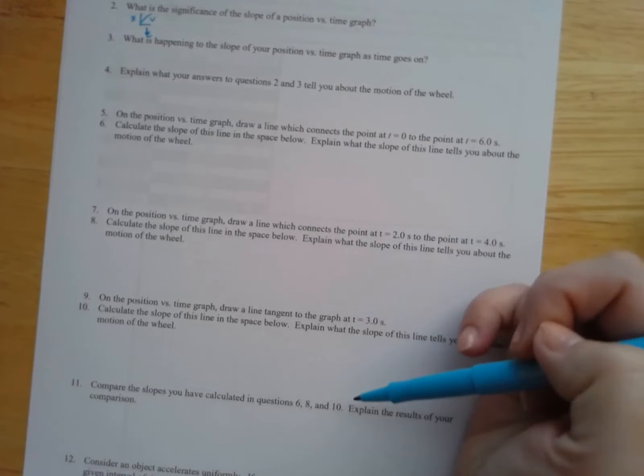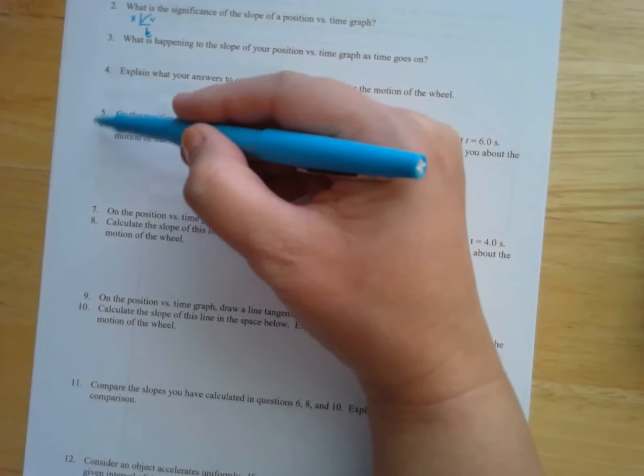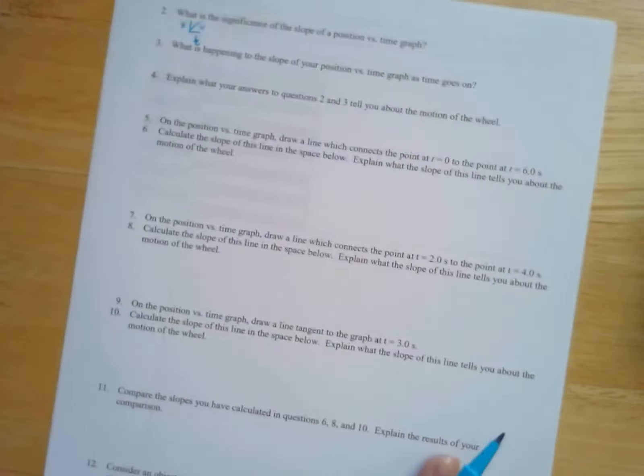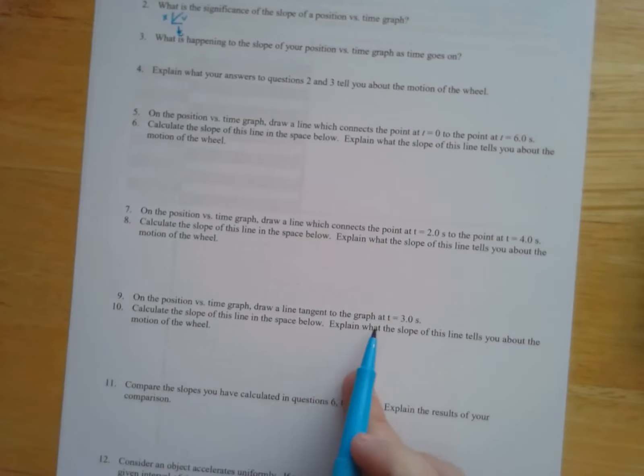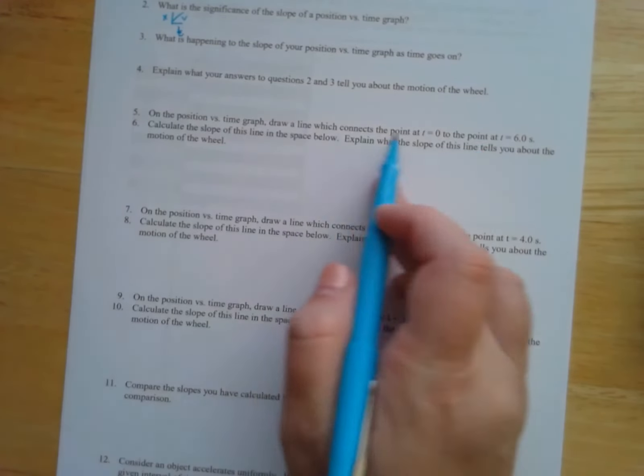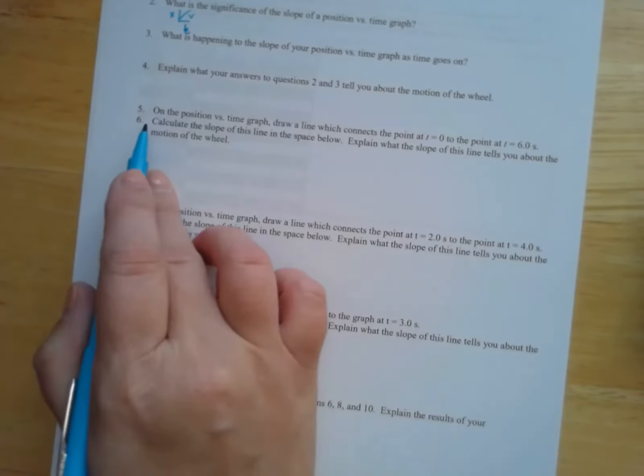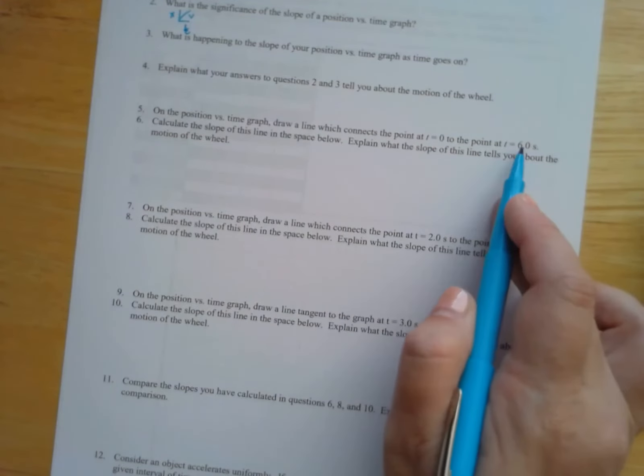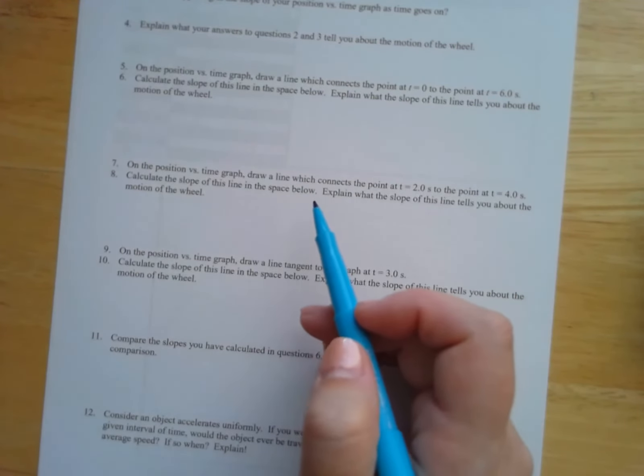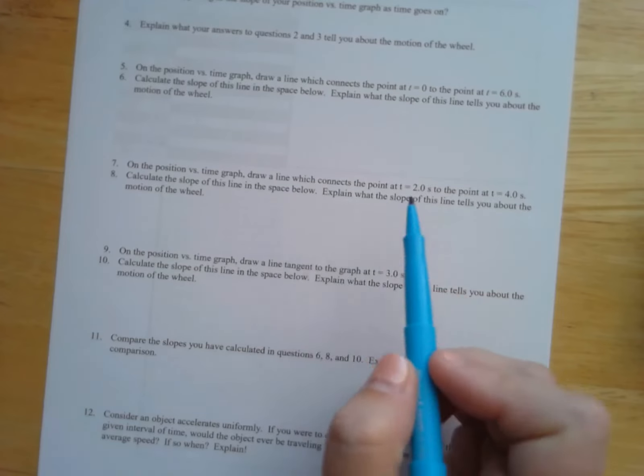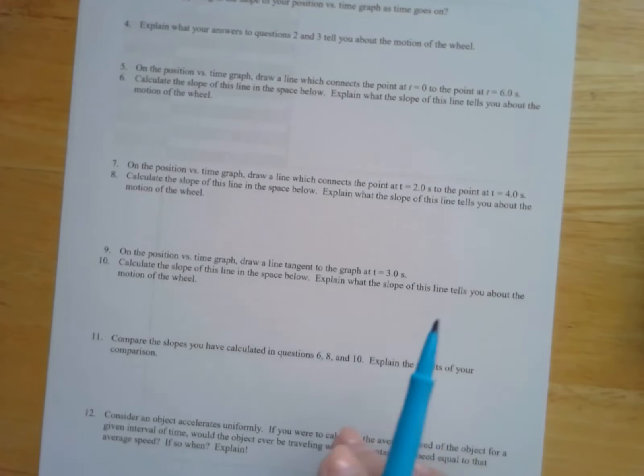And then there's a series of questions here. See how they're in little groups, five and six, seven, eight, nine, and 10. What you need to do is draw lines that connect different points on the graph. So this first one is draw a line that connects zero to six seconds. Here the next one is draw a line that connects the points at two seconds and four seconds.